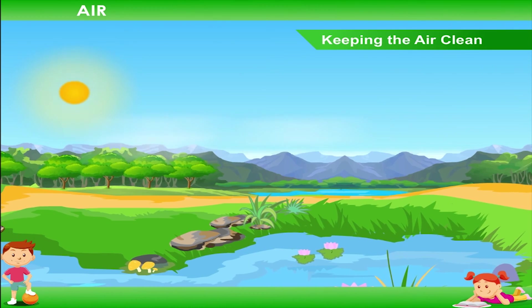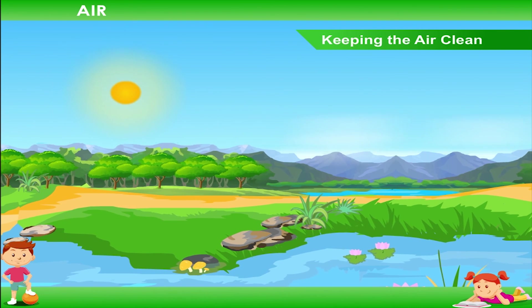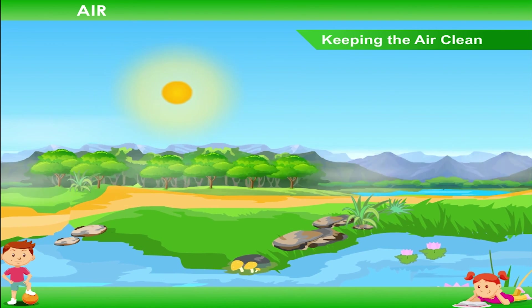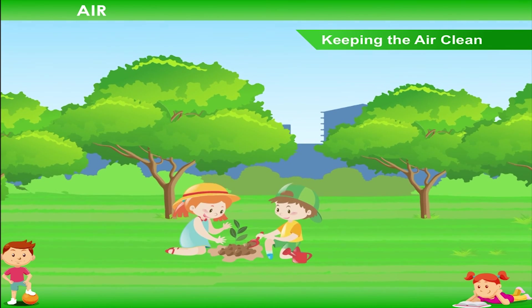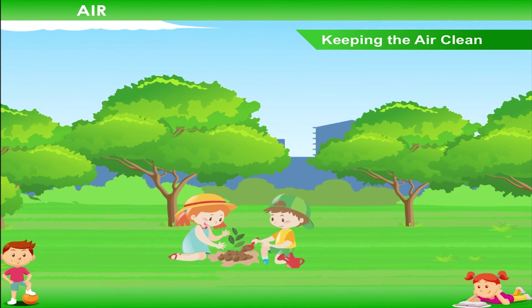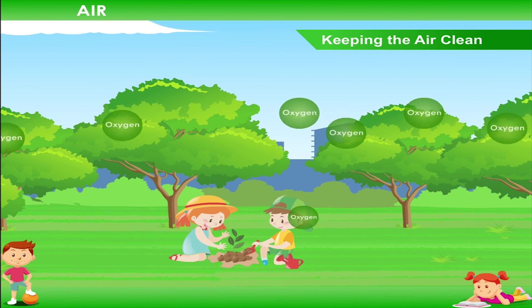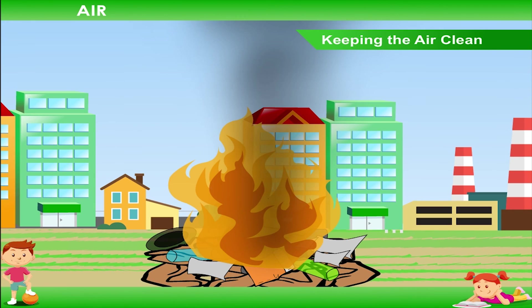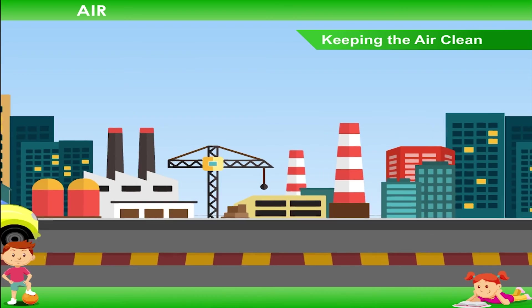Keeping the air clean: we should try to keep the air clean and prevent it from getting dirty. We should grow more and more trees because plants keep the air clean and produce oxygen gas. We should avoid burning waste in the open and reduce the usage of vehicles.